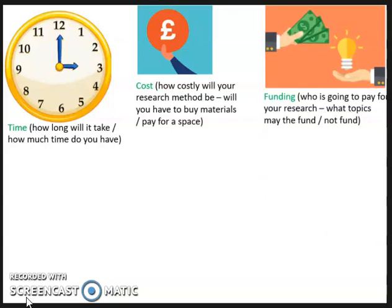Cost is closely linked to funding — who is actually paying for your research? If you're a professional sociologist at a university, your salary is paid by the university, but they might not cover all research expenses. Many sociologists are sponsored by the government, companies, or charities — for example, Shelter will often fund research into homelessness. An important practical consideration is that funding can affect which topics are selected, and researchers might avoid findings that go against the interests of their funder, for fear of having funding cut.